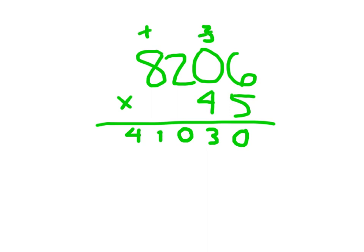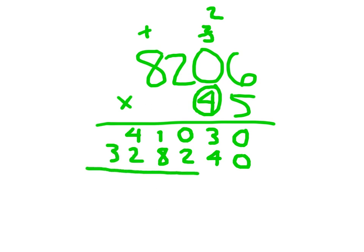Cross out my regroups. Now working with the 4, which is worth 40, so we start with the 1s place and place that 0 first. 4 times 6 is 24 — place the 4, regroup the 2. 4 times 0 which is 0, plus 2 which is 2. Then 4 times 2 which is 8. And 4 times 8 which is 32. Carefully add those numbers together.